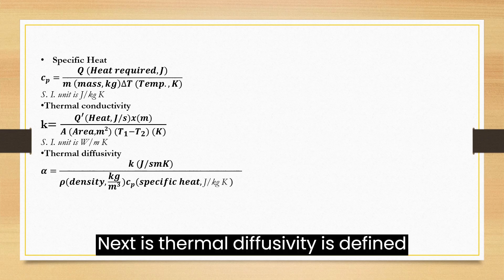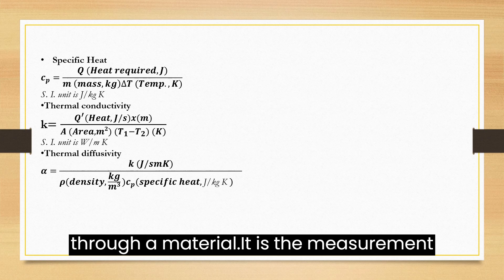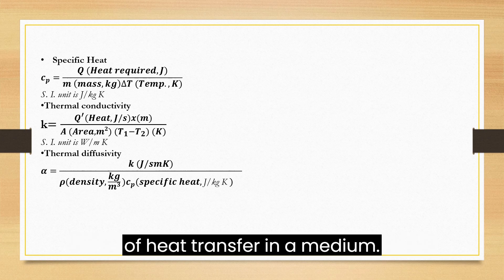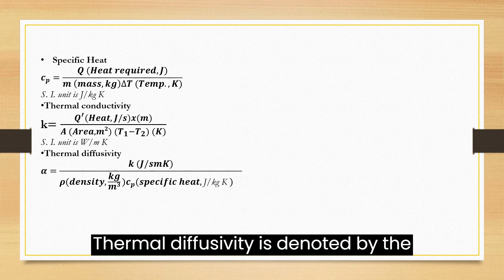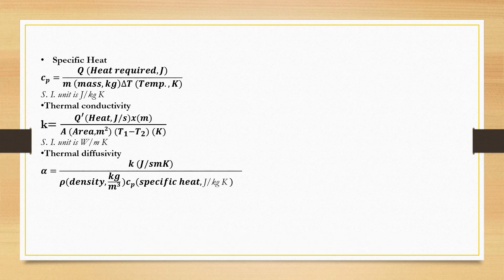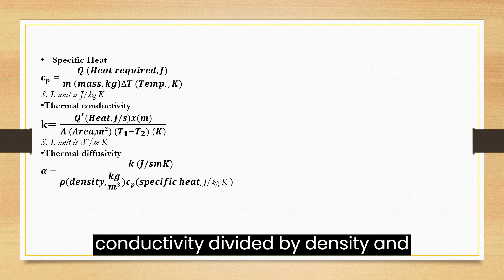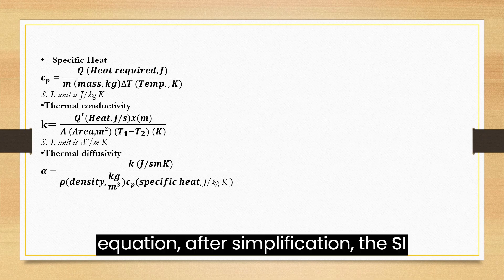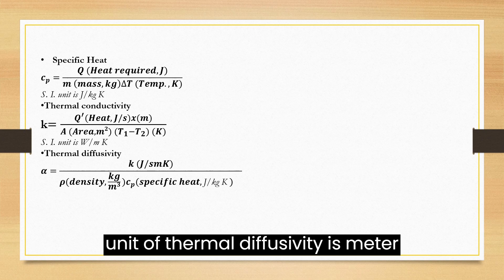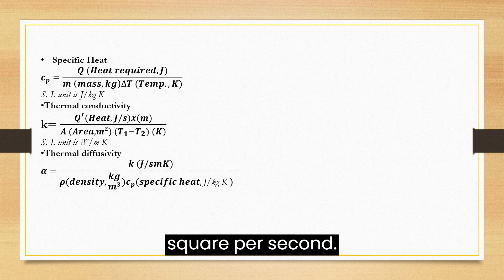Next is Thermal Diffusivity, defined as the rate of temperature spread through a material. It is the measurement of heat transfer in a medium. Thermal Diffusivity is denoted by the Greek letter alpha and is expressed as thermal conductivity divided by density and specific heat capacity at constant pressure. As we can see in the equation, after simplification, the SI unit of thermal diffusivity is meter square per second.